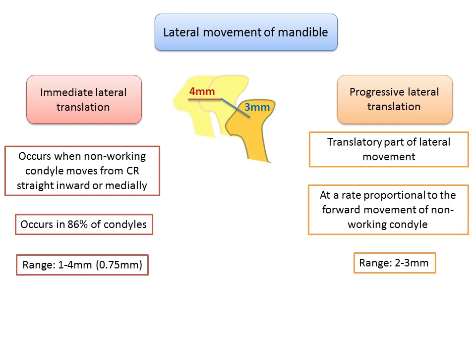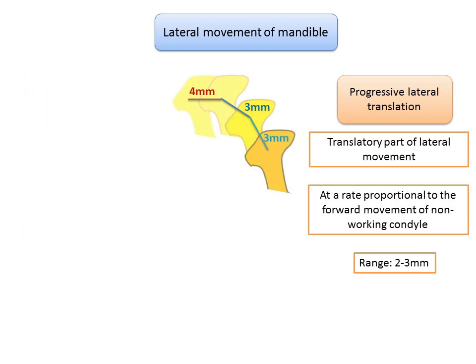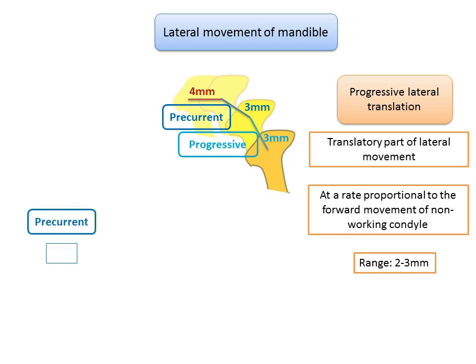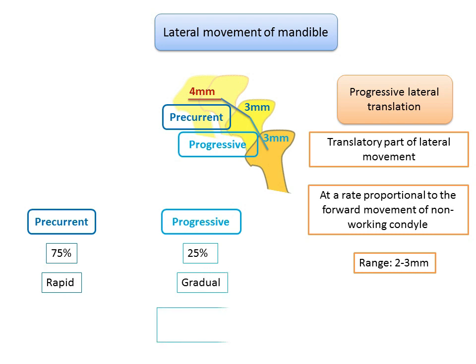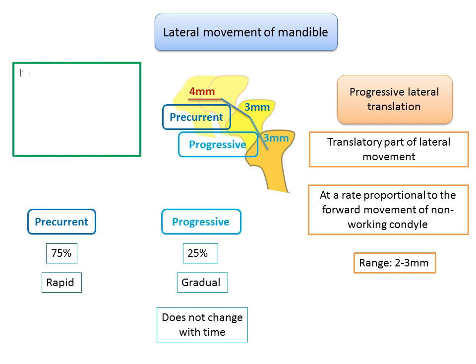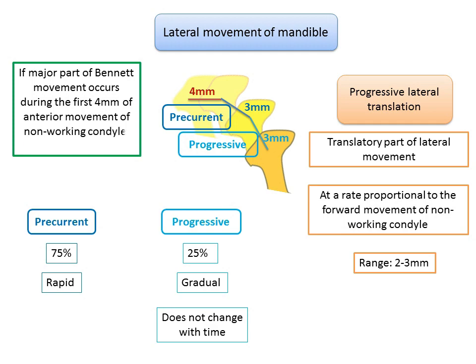Progressive lateral translation occurs in two phases: precurrent side shift and progressive side shift. Precurrent side shift accounts for about 75% of lateral translation and occurs during the first 2 to 3 mm of forward movement of the non-working condyle. Progressive side shift is the lateral translation that continues after 2 to 3 mm of forward movement. Precurrent side shift occurs rapidly, whereas progressive side shift occurs gradually. If the major quotient of Bennett movement occurs during the first 4 mm of anterior movement, it is termed distributed side shift.